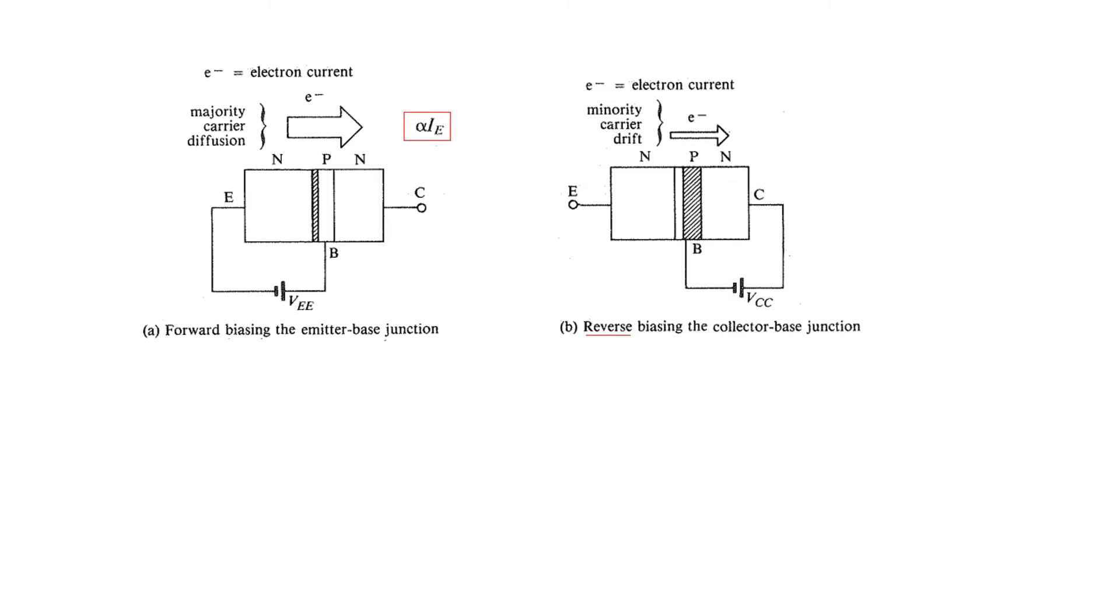Now if we take the other part, the collector and base, this is connected with the battery in the manner shown here. This is actually reverse bias because the positive of the battery is connected with the N and negative of the battery is connected with the P type. So this diode is reverse biased. And so technically no current should flow, but there is a minority carrier drift. A small current, some electrons due to the minority carrier, flows from P to N type or from base to collector.